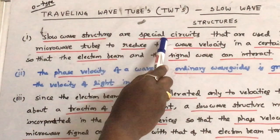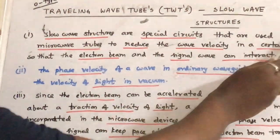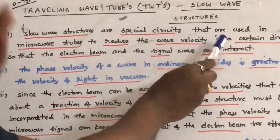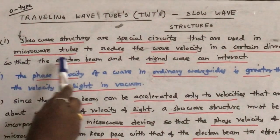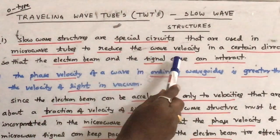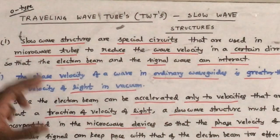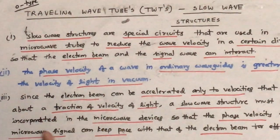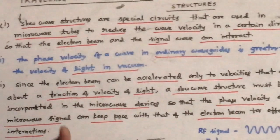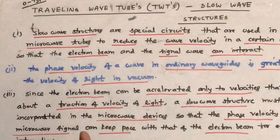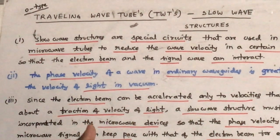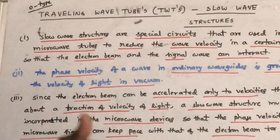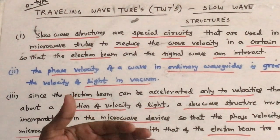The slow wave structures are special circuits that are used in microwave tubes to reduce the wave velocity in a certain direction so that the electron beam and the signal can interact. These slow wave structures are used to reduce the velocity of the RF signal so that there will be an effective interaction between the RF signal and the electron beam.